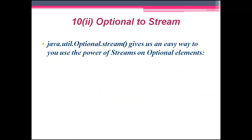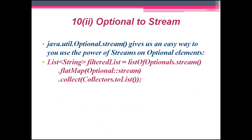The final feature is optional-to-stream. The Optional class was launched in Java 8, but the optional-to-stream feature is new in Java 9. java.util.Optional.stream() gives an easy way to use the power of streams on optional elements. For example: List<String> filterList = listOfOptional.stream().flatMap(Optional::stream).collect(Collectors.toList()).